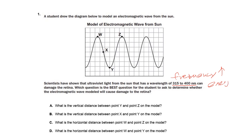Higher frequency means it's carrying more energy. Looking at answer A — what is the vertical distance between point Y and point Z — that's talking about the height of the wave, which is the amplitude. A large amplitude is not going to tell us whether the wave can damage the retina, so we can eliminate A. Answer B — what is the vertical distance between point X and point Y — once again, vertical means amplitude, not frequency.